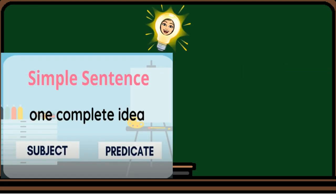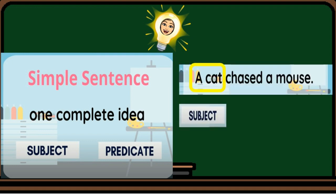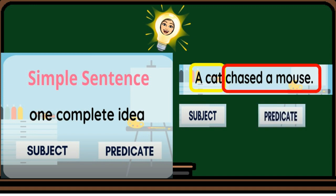A simple sentence has one complete idea with a subject and a predicate. In this sentence, a cat is the subject, while chased a mouse is the predicate.